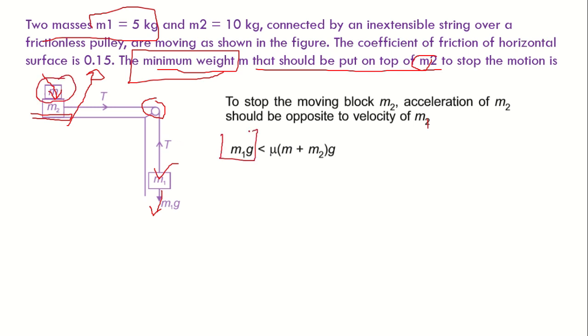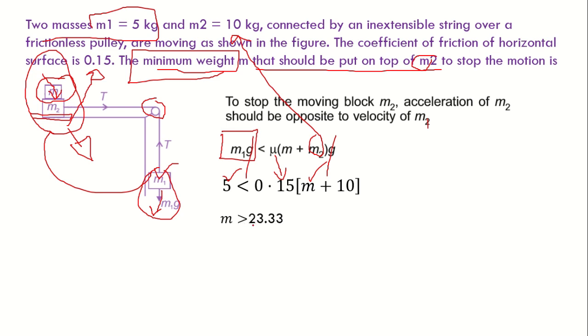So now M1 G should be less than mu into M plus M2, that is, this should be less than this total value to stop the motion. We know all the values, this G gets cancelled out. Now M1 is given 5 and mu is given 0.15 and M we have to calculate and M2 is given 10 kgs. Now if you simplify this one, you will be getting M should be greater than 23.33, which is your answer.